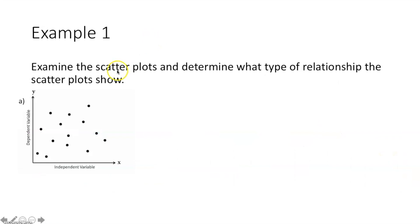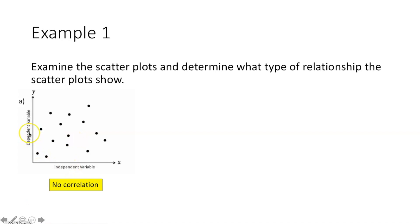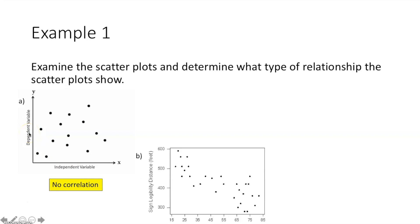Example time. Examine these scatter plots and determine what type of relationship they show. First, ask yourself: is the graph going up and to the right, or down and to the right? For graph A, I can't tell — so this graph has no correlation between the independent variable and dependent variable.